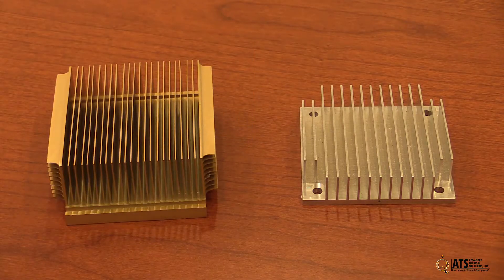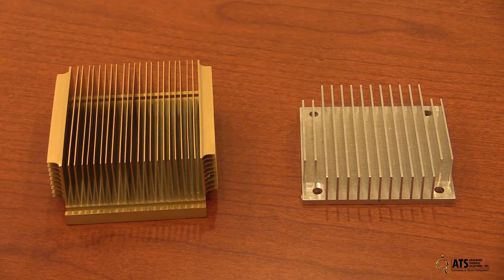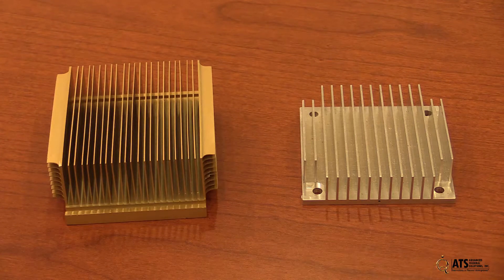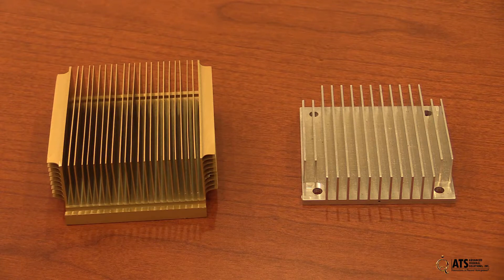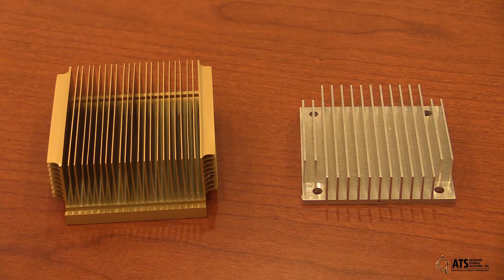So you can see the two straight-fin heat sinks. The one to my left here, the bare aluminum one, has a wider spacing between fins. And the gold anodized one on my right has a smaller spacing. And the one on the left, the wider spacing is going to be better for natural convection.